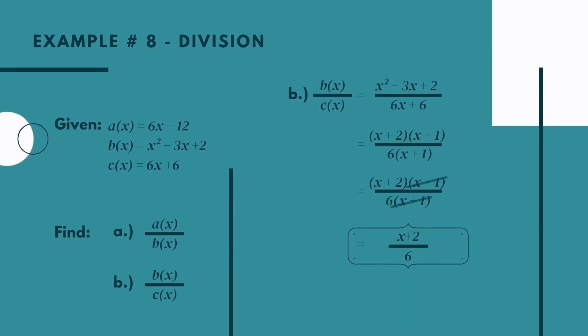Next is b(x) over c(x). Substitute: b(x) is x squared plus 3x plus 2, over c(x) is 6x plus 6. Factor the numerator as (x plus 2)(x plus 1). Factor the denominator using GCF of 6: 6(x plus 1). Cancel (x plus 1) in the numerator and denominator. Our final answer is (x plus 2) over 6.